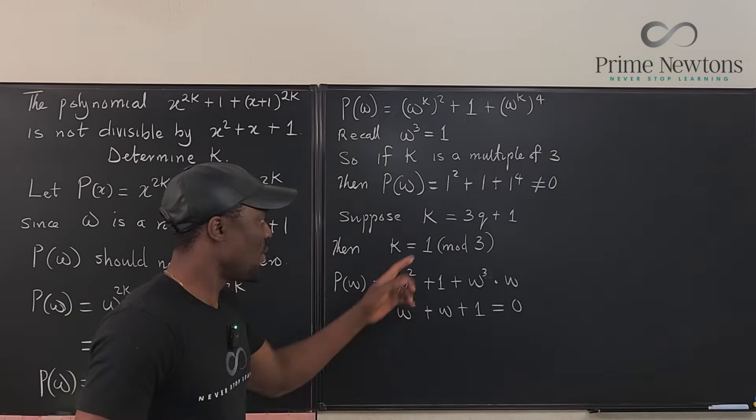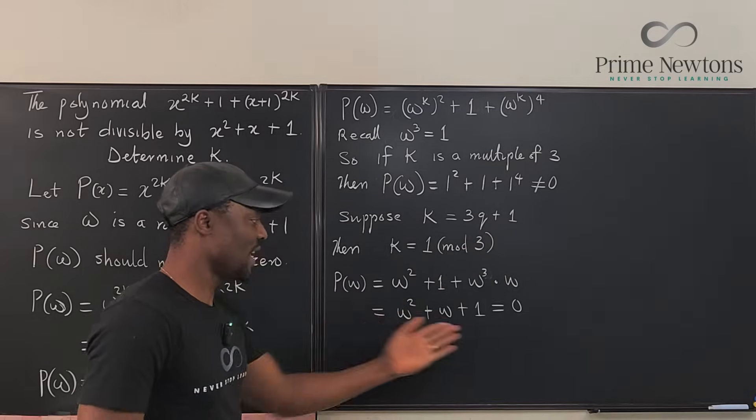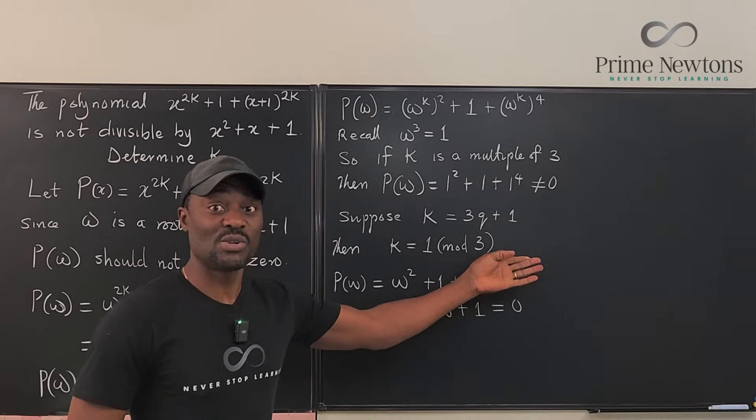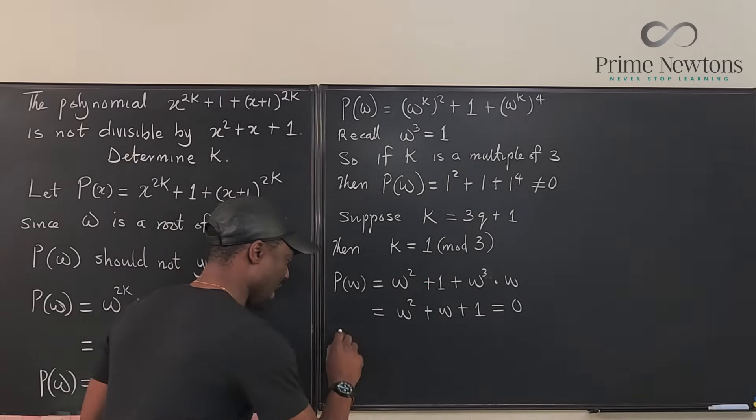So, in this case, when the remainder is 1, you're going to get a 0. So, with this, we can say that this is not a valid nature of k. Not valid for k.